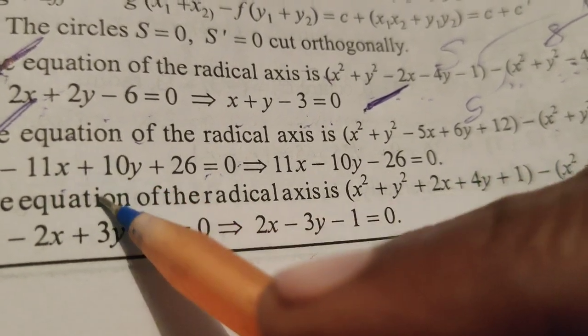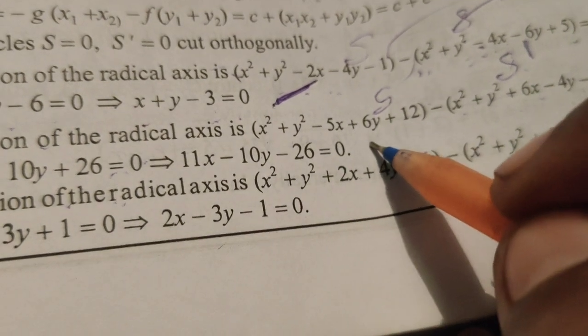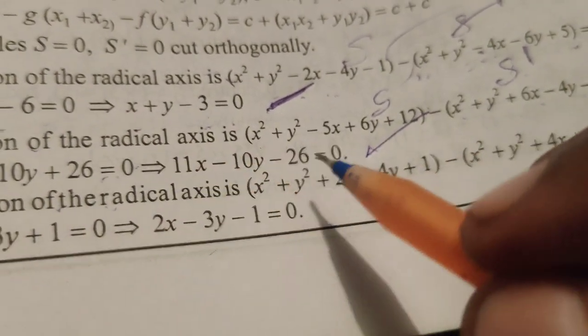Therefore, 11x minus 10y minus 26 equals to 0 is the equation of the radical axis for the given two circle equations.